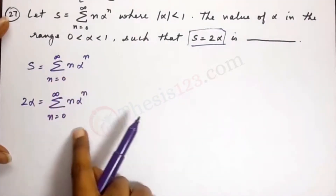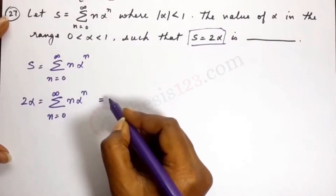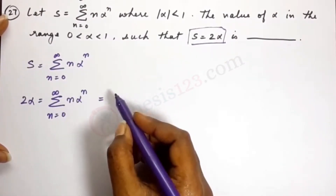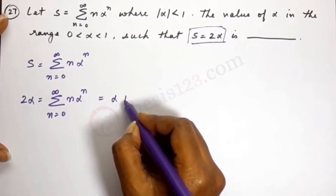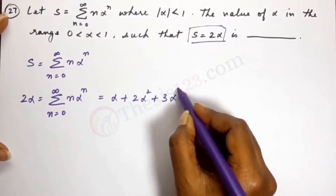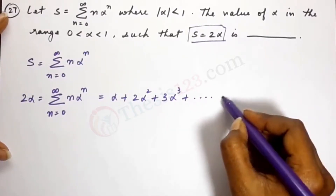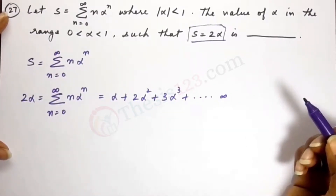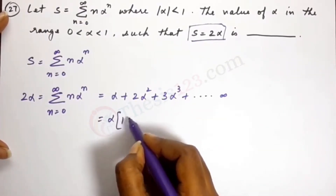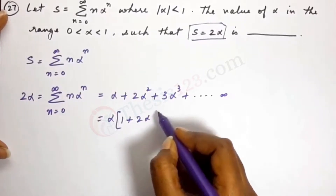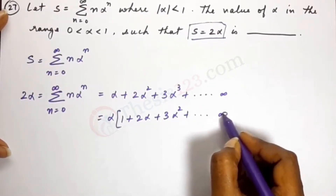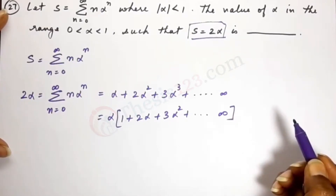Let's expand this by putting n equal to 0, 1, 2, 3, and so on. We get alpha plus 2 alpha squared plus 3 alpha cubed, and so on up to infinity. Taking alpha as a common factor, we get alpha times the quantity 1 plus 2 alpha plus 3 alpha squared, and so on up to infinity.